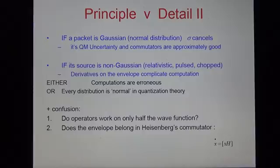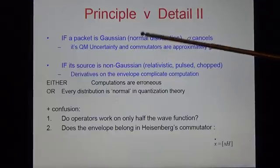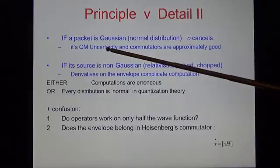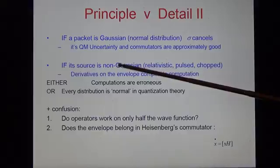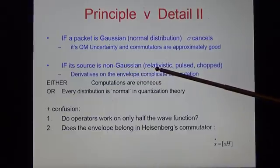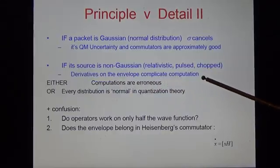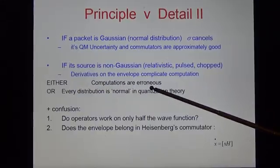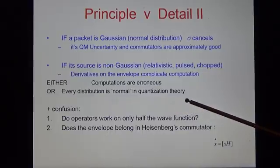Well, what about quantum mechanics? If a packet is Gaussian, that is, if the distribution is normal, sigma cancels as we saw. Its quantum mechanical uncertainty and its commutators are approximately good, but if it's sorted non-Gaussian, if it's relativistic, if it's pulsed, if it's chopped, then derivatives on the envelope complicate the equation. And it follows that either computations are erroneous, or every distribution is normal in some unwritten quantization theory. But there are other confusions.